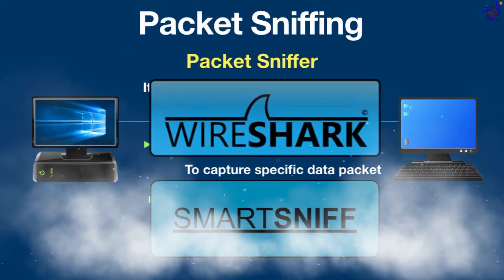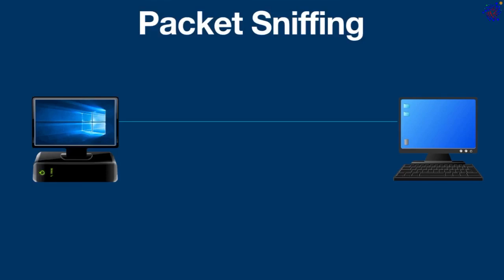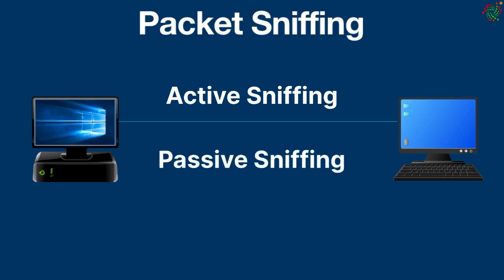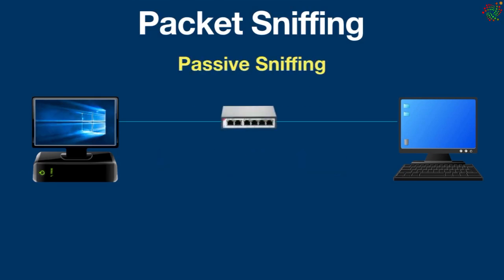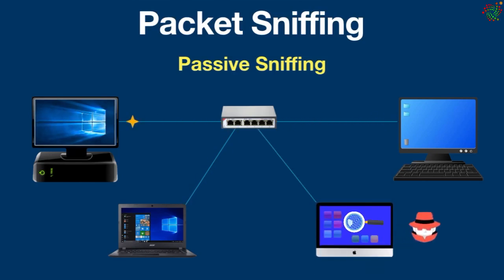Wireshark and SmartSniff are examples of packet sniffing tools. When a hacker executes a sniffing attack, it can be classified into two types: active and passive. Passive sniffing is typically used in networks where hubs are used. When a small number of devices are connected to a local area network or wireless network, a hacker could connect and passively monitor all network traffic going through the hub.